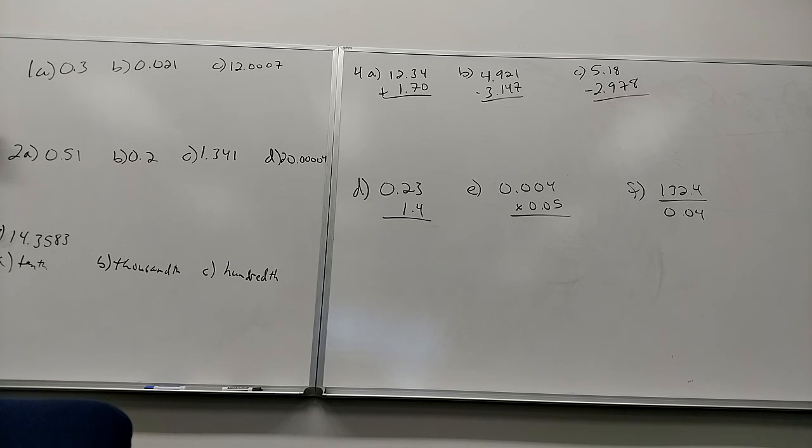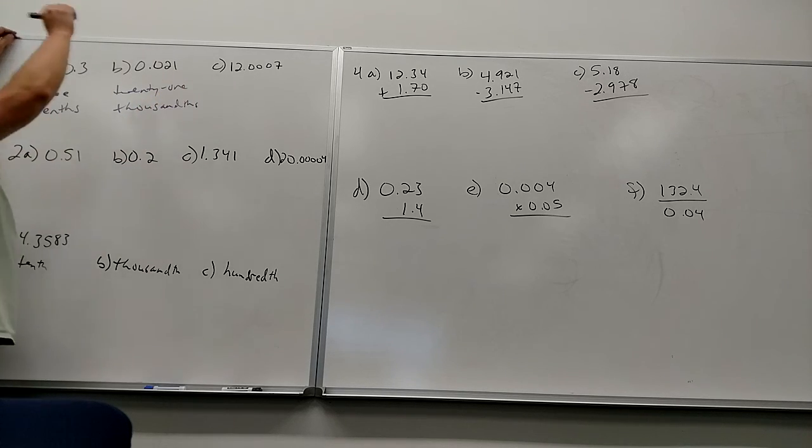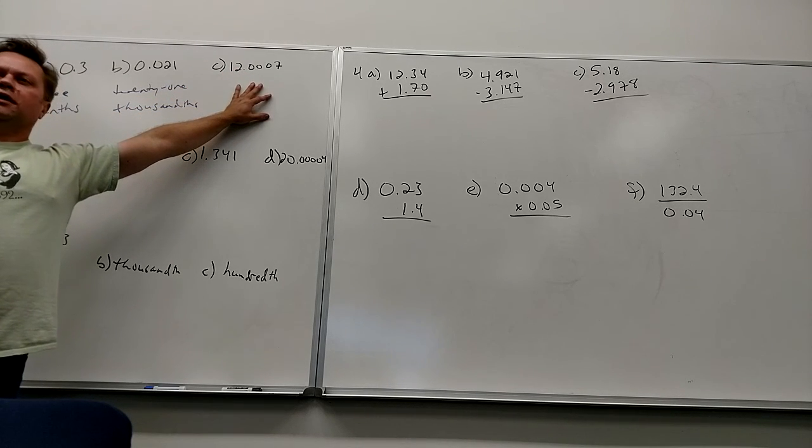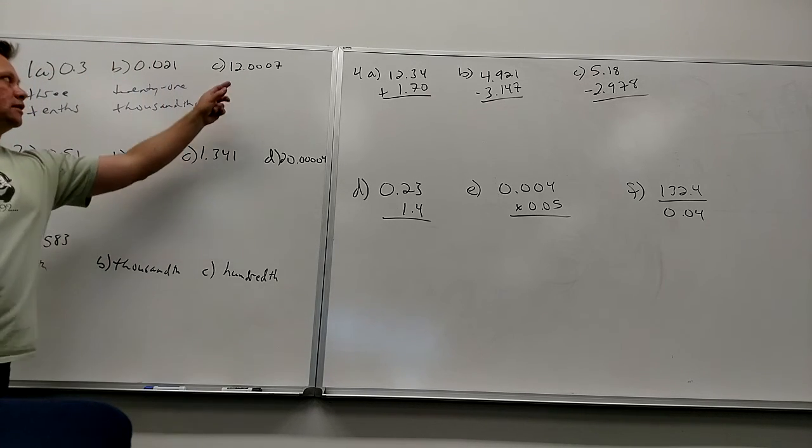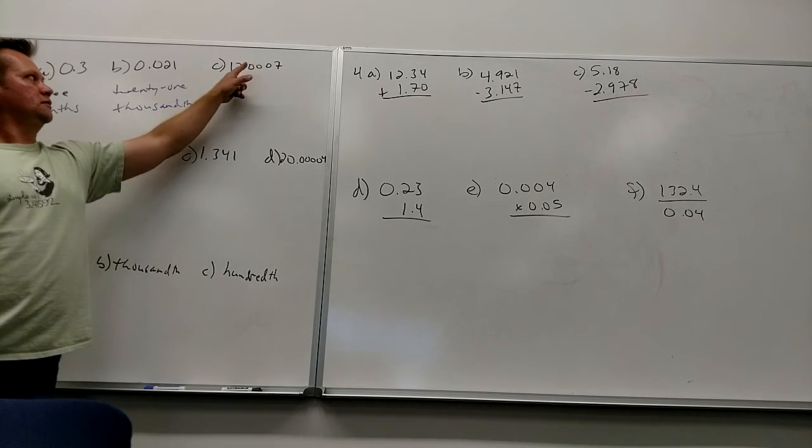Hopefully you guys realize that one and two are intimately related. The way you say it in words is the way you write it as a fraction. This you would say as three-tenths. This would be twenty-one thousandths. Now this is interesting. How do you write a check? If it's whole plus cents, you say blah blah and so many cents. The 'and' means where the decimal is. So this would be twelve and seven ten-thousandths.